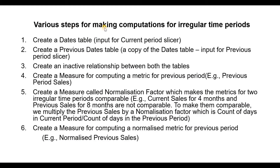First of all, let's see the various steps for making computations for irregular time periods. The first step is creating a dates table. This dates table will be the input for the current period date slicer. The second step is to create a previous dates table, which is a copy of the dates table, and this will be the input for the previous period slicer.